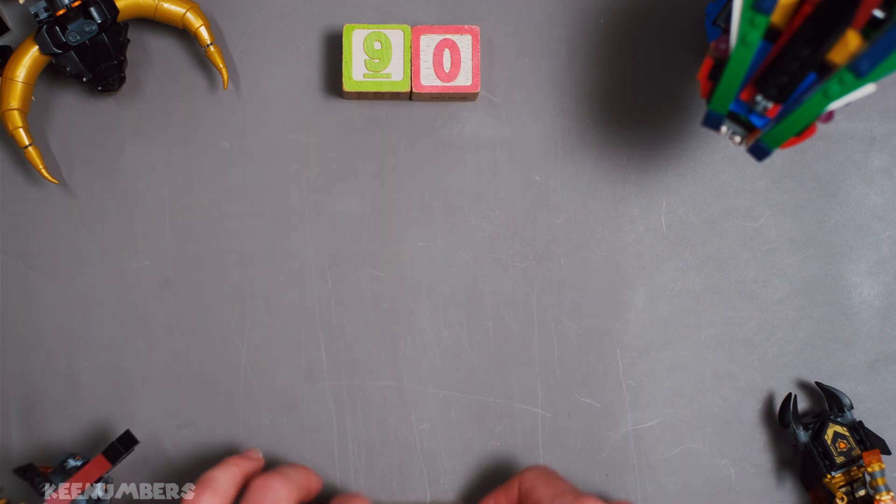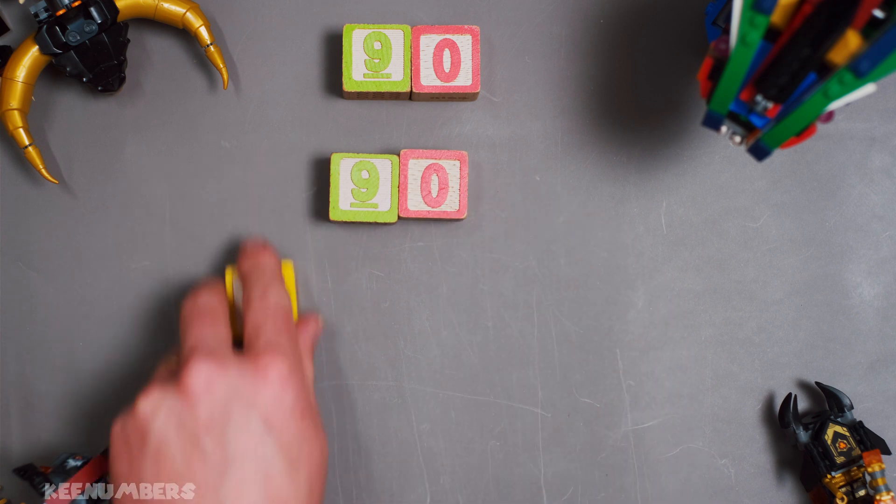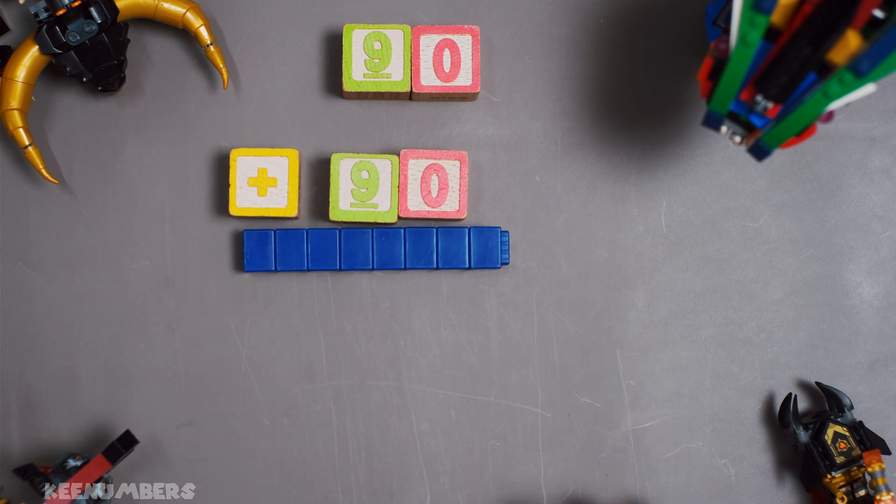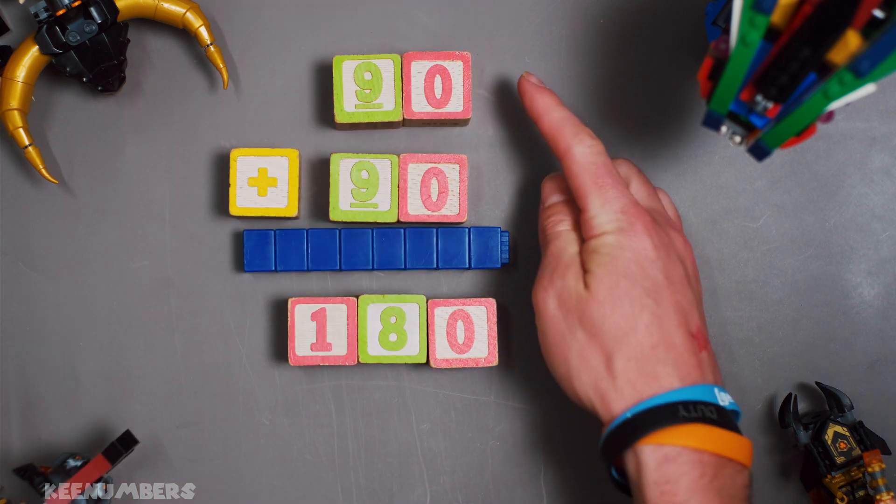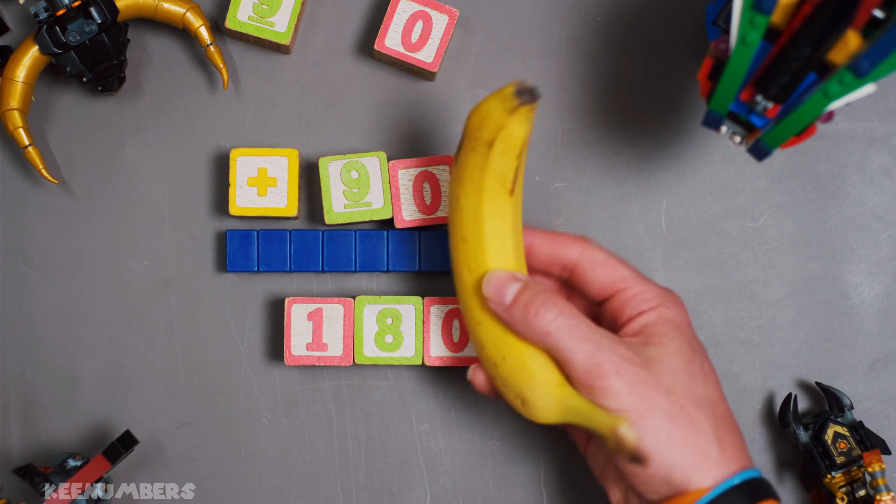If you don't see that clearly, 90 plus 90 is a whoopin' 180 degrees. So it is its own supplementary angle. Banana!